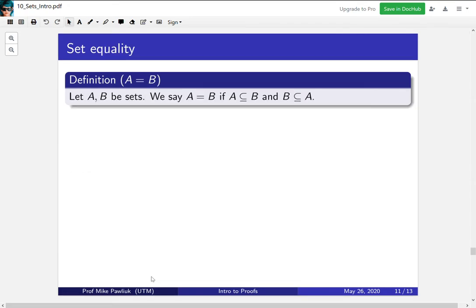Now we look at set equality. For two sets A and B, we say that A is equal to B, if A is a subset of B, and B is a subset of A. Notably here, this is a definition. This tells us what it means for two sets to be equal. So if ever we need to prove that two things are equal, this is the definition we go back to.